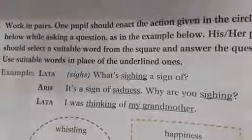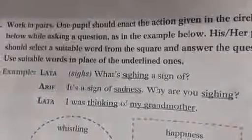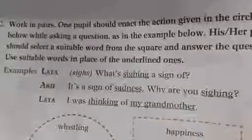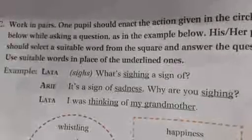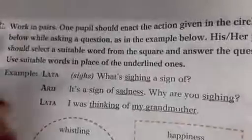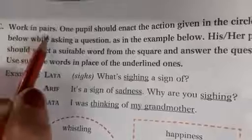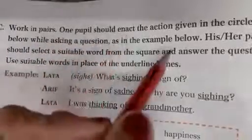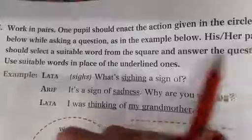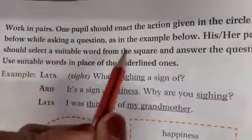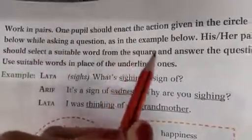Good morning, dear students. This is your English period — a new Learning to Communicate lesson 3, page number 42. Question C: work in pairs. One pupil should enact the action given in the circle below while asking a question as in the example below.